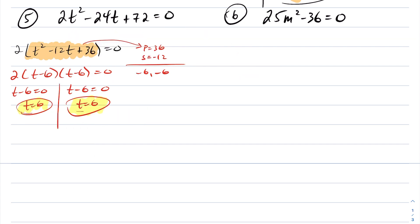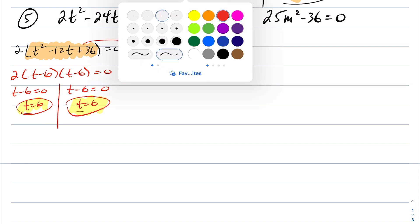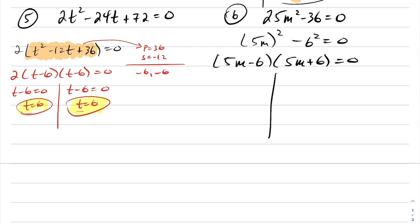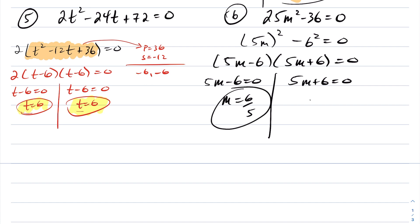Moving on to example 6, we have a difference of squares question. To factor this, I express it as a power of 2: (5m) squared minus 6 squared, which factors into (5m minus 6)(5m plus 6). Either 5m minus 6 is 0 or 5m plus 6 is 0, giving m equals 6 over 5 or m equals negative 6 over 5. So this quadratic has two roots, one at 6 fifths and the other at negative 6 fifths.